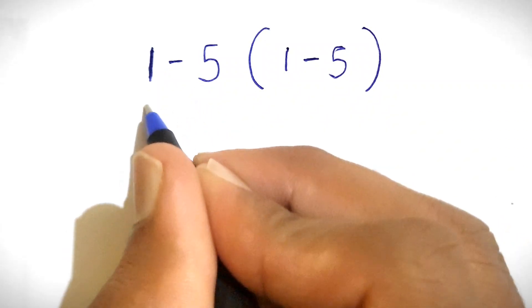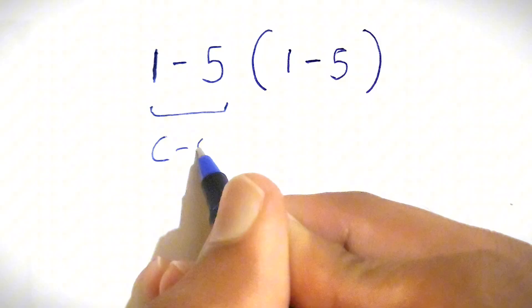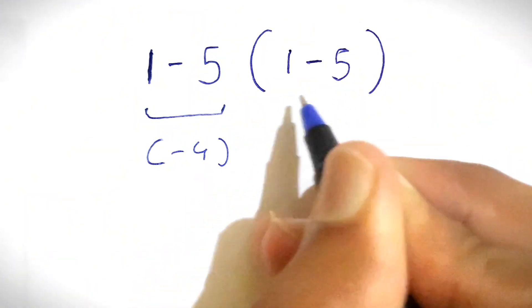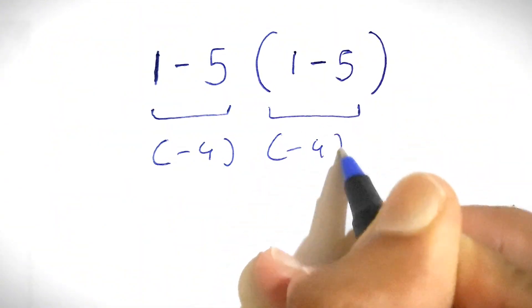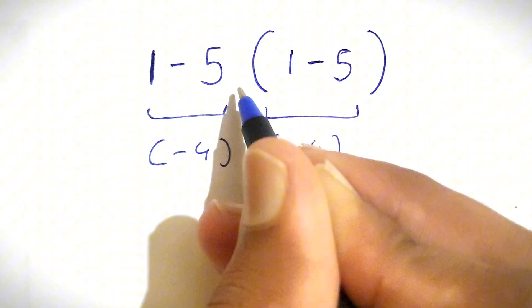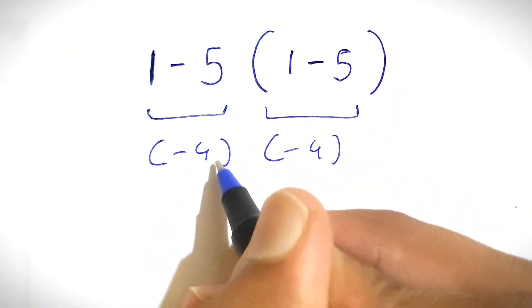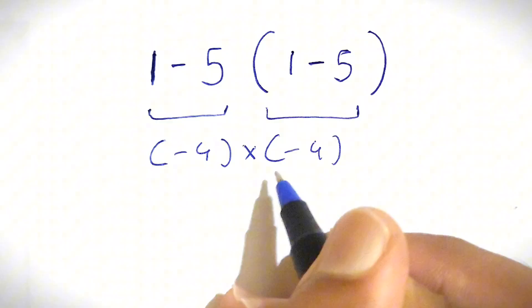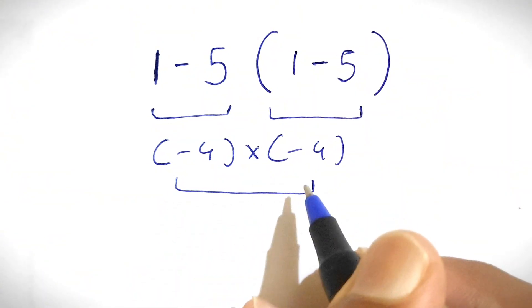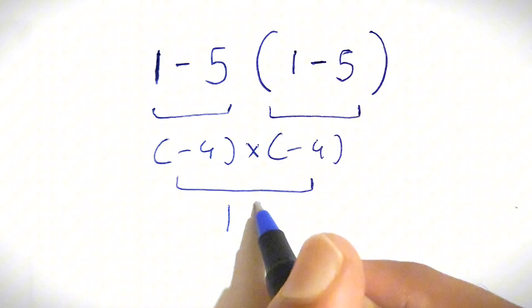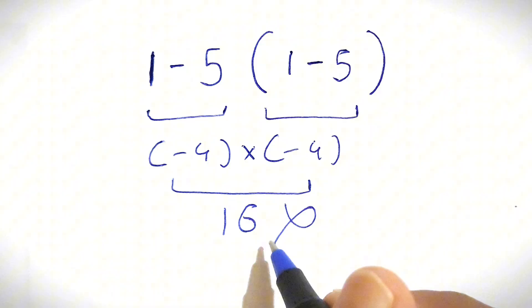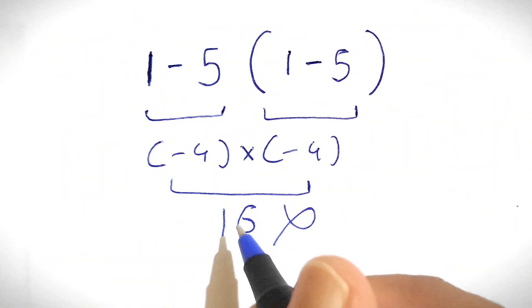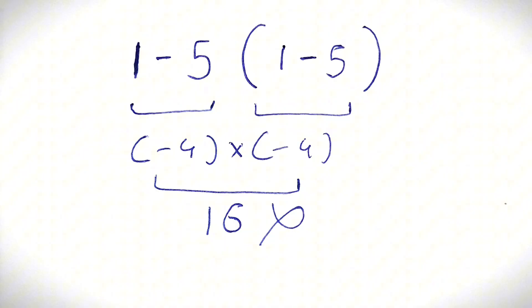1 minus 5 gives us negative 4, and again this 1 minus 5 also gives us negative 4. So we have negative 4 times negative 4, which gives us 16 because negative times negative is positive. But this answer is wrong because we have not followed the order of operations.